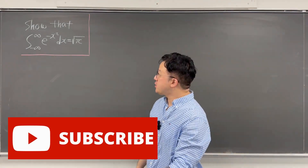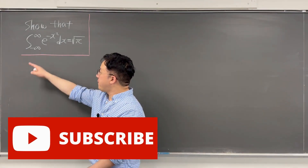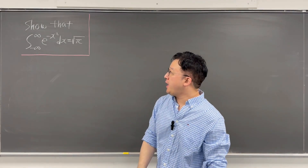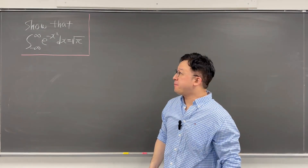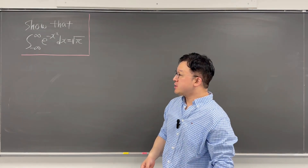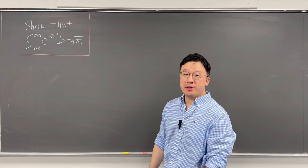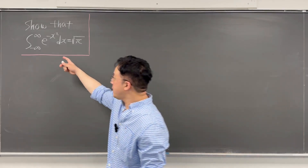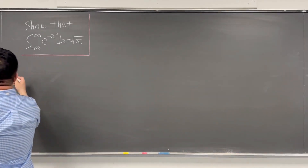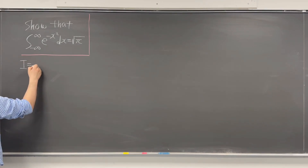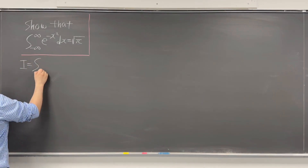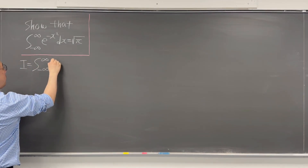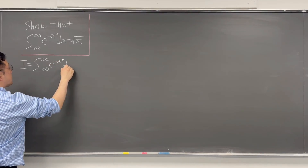Okay, here's the question. Show that the integral from negative infinity to infinity of e to the power of negative x squared dx is equal to the square root of pi. We'll be using polar coordinates and also a double integral to show this. So first of all, let me call this integral I. So I is the integral from negative infinity to infinity of e to the power of negative x squared dx.